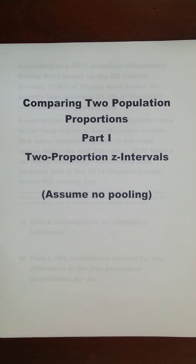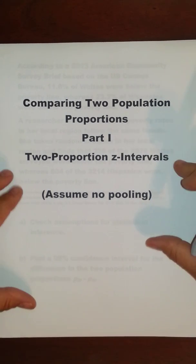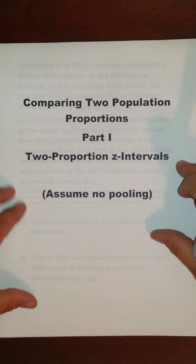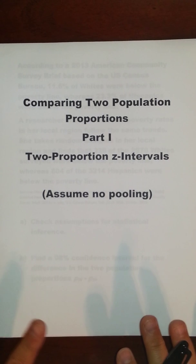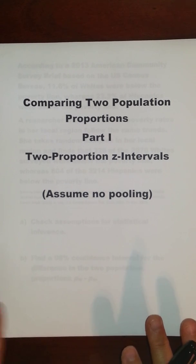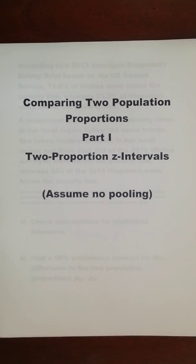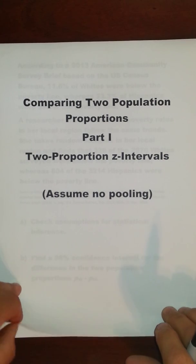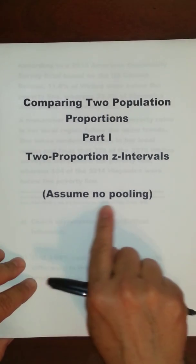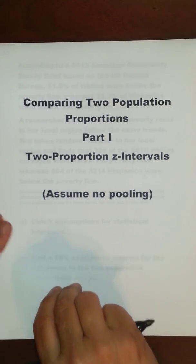This video is going to be comparing two population proportions. This first part, part one, is going to be about finding the confidence interval. The second part will be a separate video, but the same scenario and same numbers will be about the hypothesis test. And for those of you who happen to have read the book, we're not pooling.